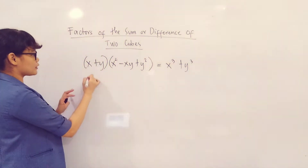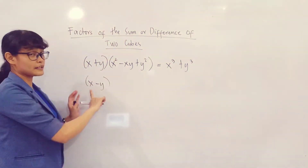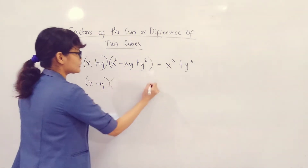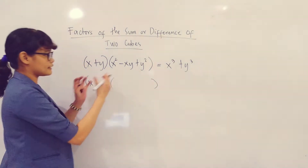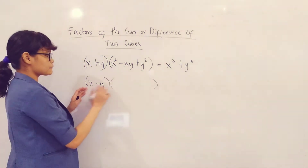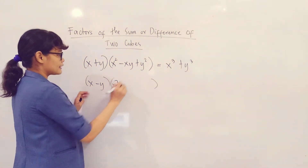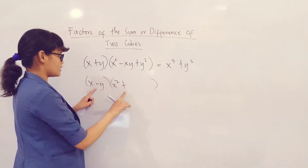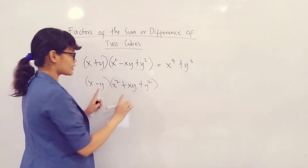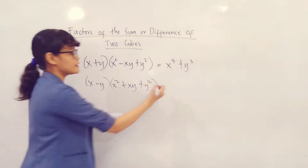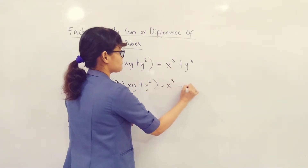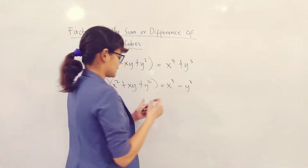Likewise, if we are going to multiply our binomial x minus y, and obtain the trinomial factor, we do the same process: square the first term, get the opposite sign — so this is plus — get the product, and then the square of the last term. This gives you a product equal to the difference of two cubes.